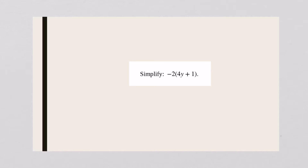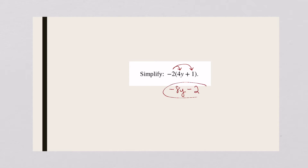This time I'm going to distribute a negative two, so negative two times 4y and negative two times one. Negative two times 4y is negative 8y. Negative two times positive one is a negative two, so I'm going to put a minus two here. That's as good as it gets.